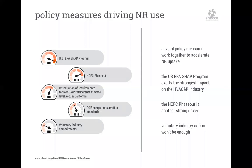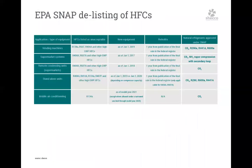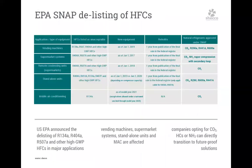The U.S. Environmental Protection Agency announced the delisting of R134A, 404A, 407A, and other high-GWP HFCs in major applications, including vending machines, supermarket systems, standalone units, and mobile air conditioning. Companies opting for CO2, ammonia, or hydrocarbons can directly transition to future-proof solutions. On the other side, the listing of natural refrigerants opens the market to these alternatives.